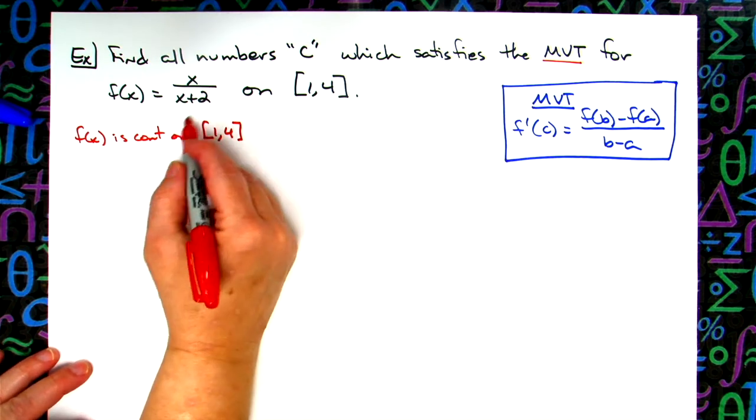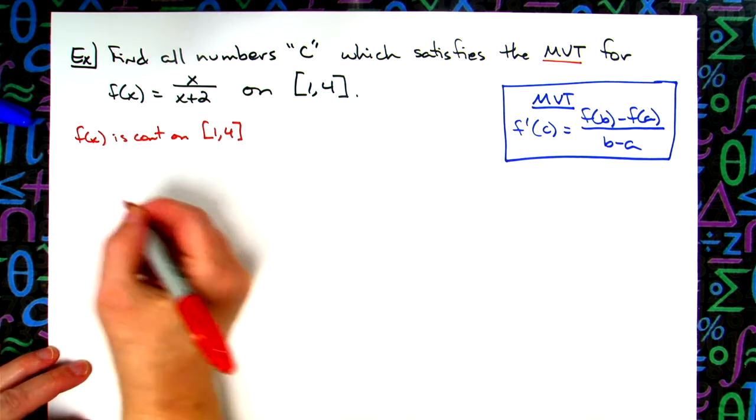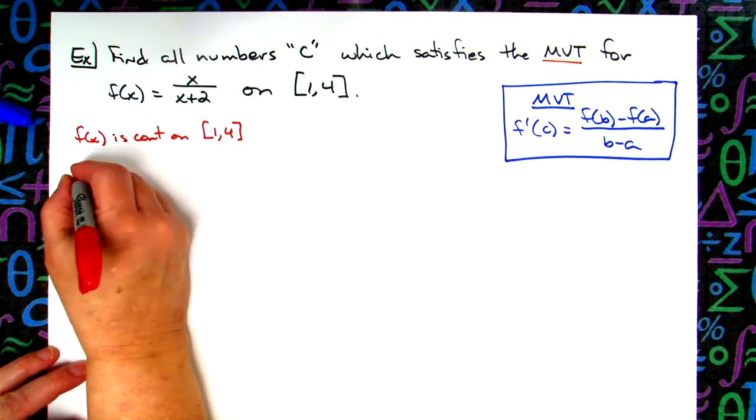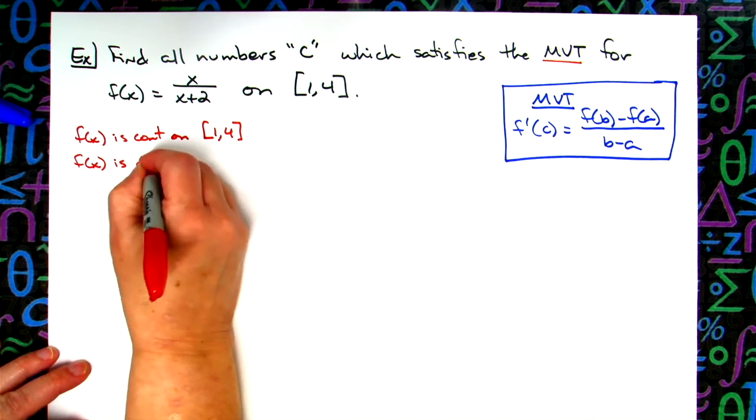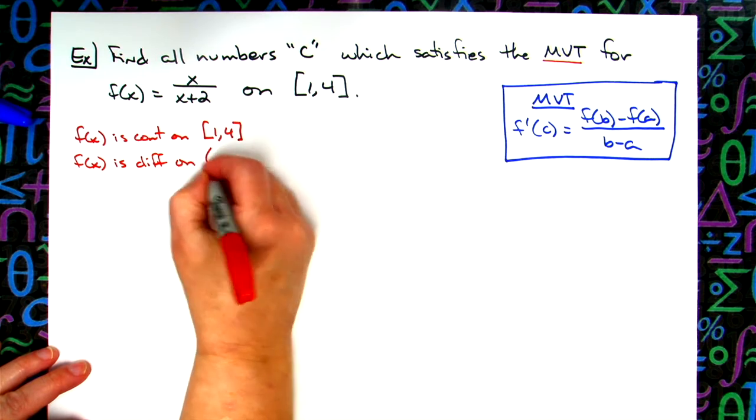Alright, if it is continuous there, there's not going to be any cusp or any jumps or holes there as well. So that means f(x) then is differentiable on that open interval from 1 to 4.